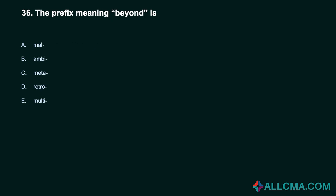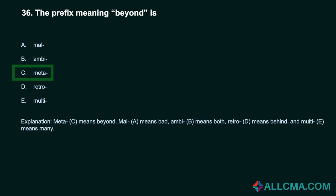Question 36: The prefix meaning beyond is: a) mal, b) ambi, c) meta, d) retro, e) multi. Correct answer: C, meta. Meta means beyond. Mal means bad. Ambi means both. Retro means behind. Multi means many.